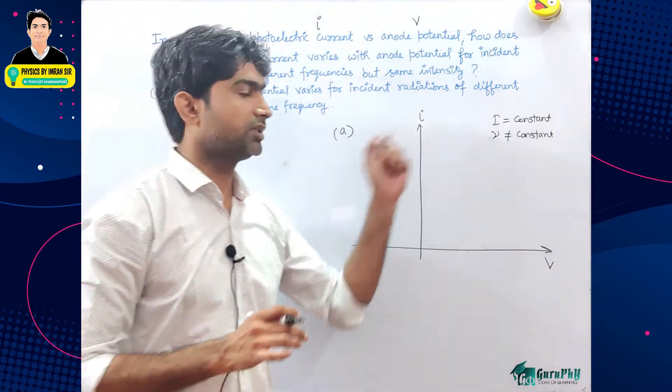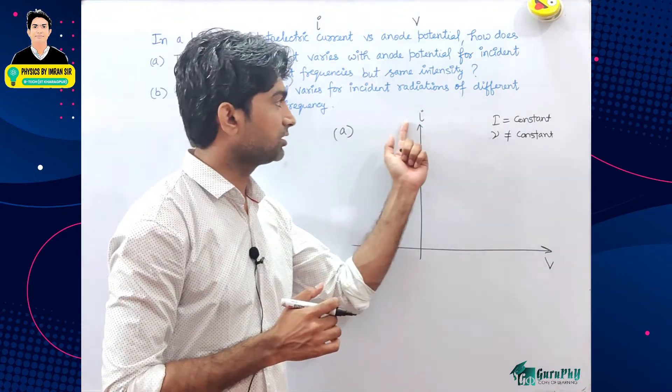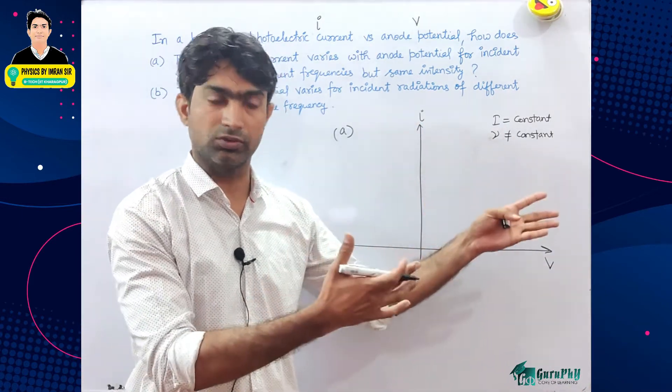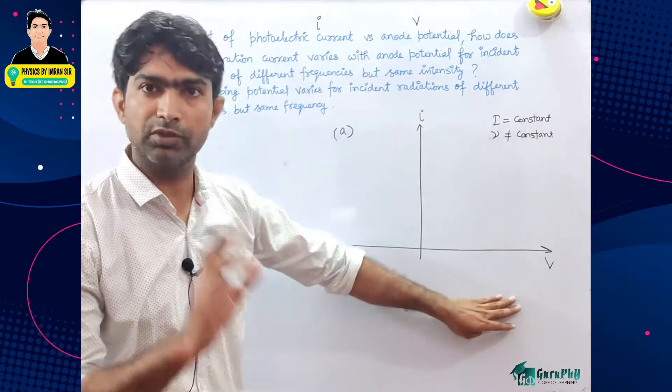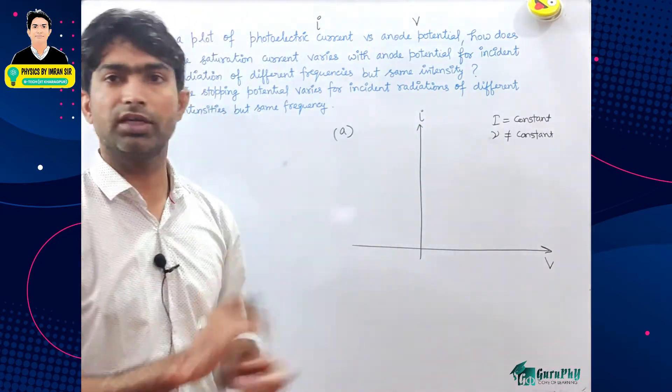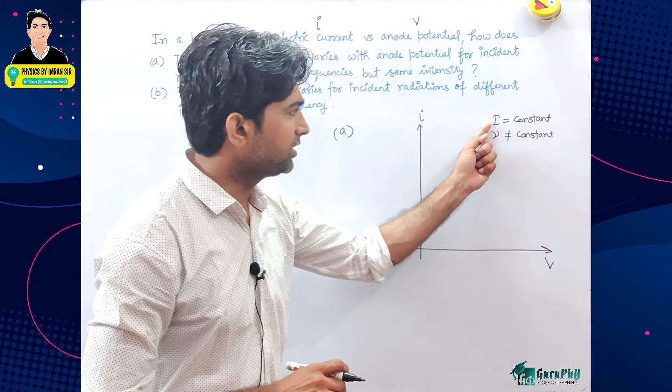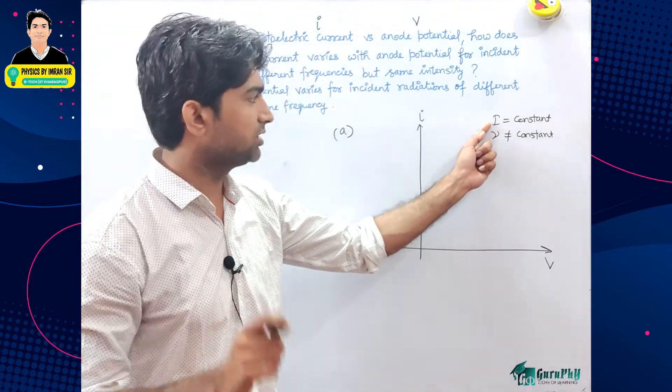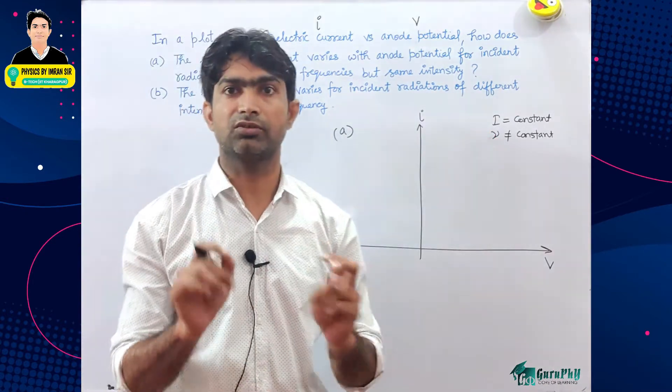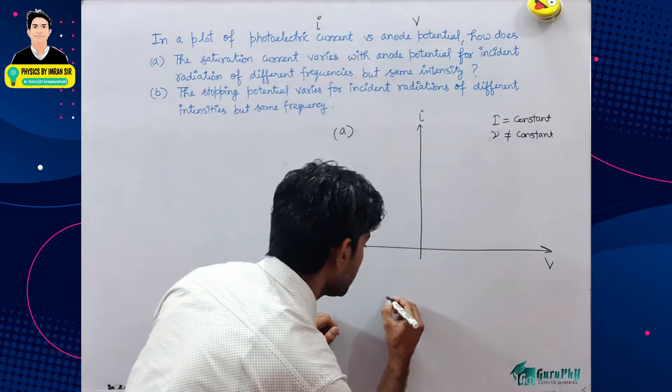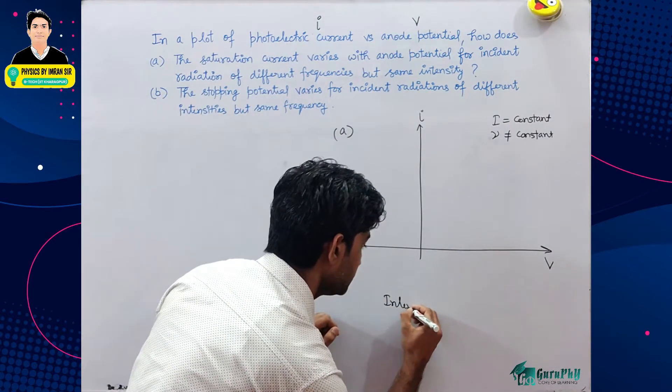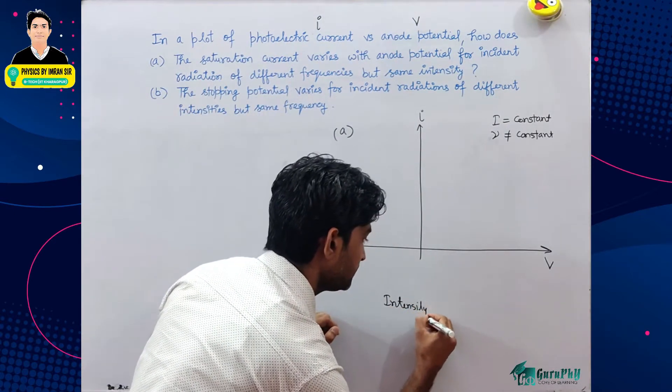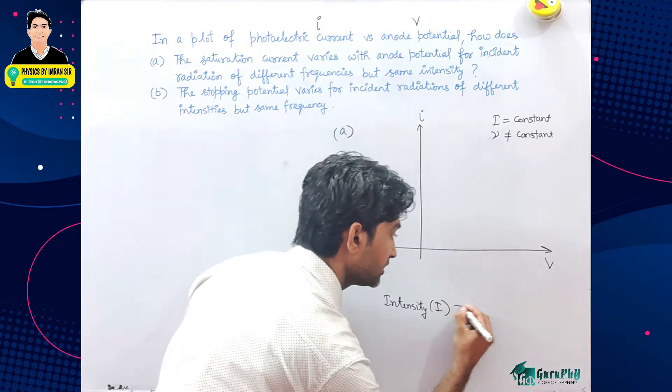Agar aise two graphs karenge, saturation current jo bhi aayegi vo change aati hai. Is graph mein I versus V mein do cheezein change hoti hai - saturation current aur stopping voltage.